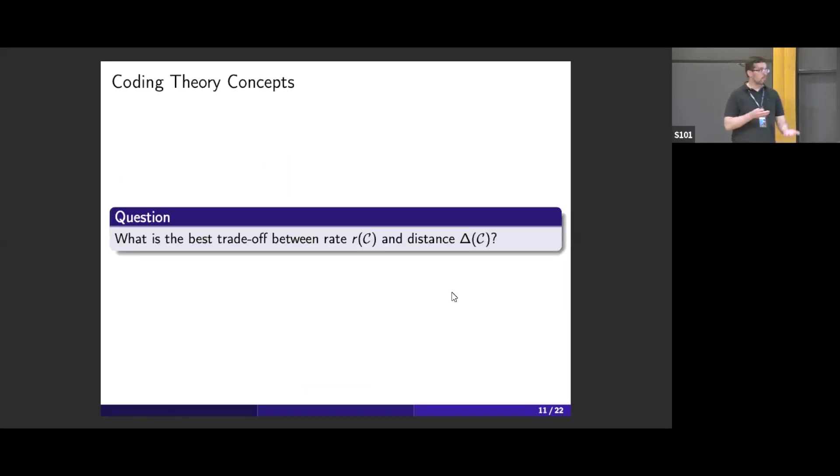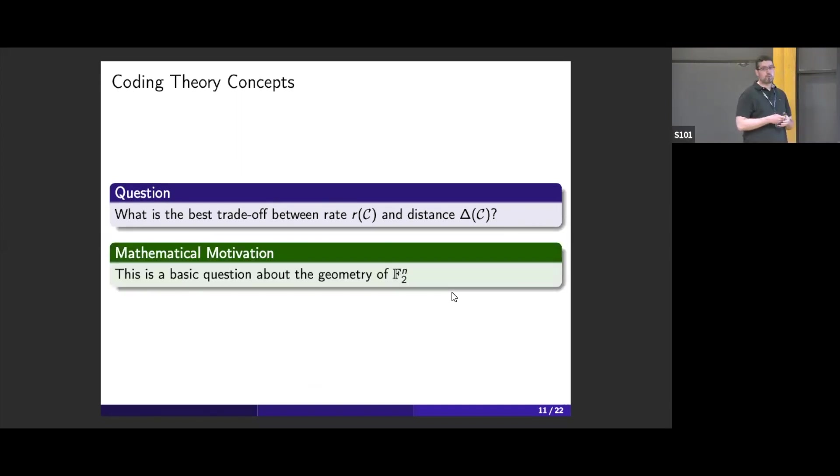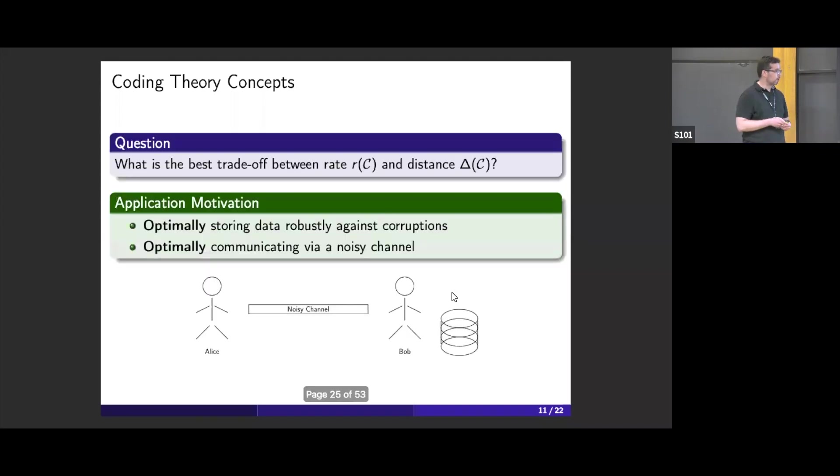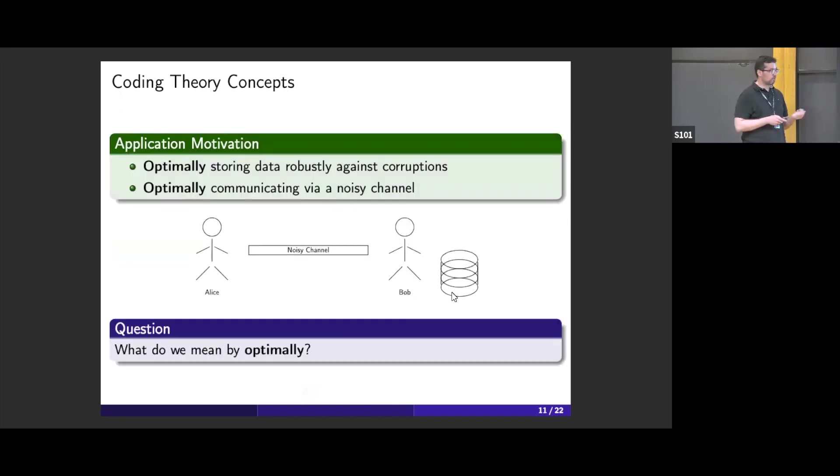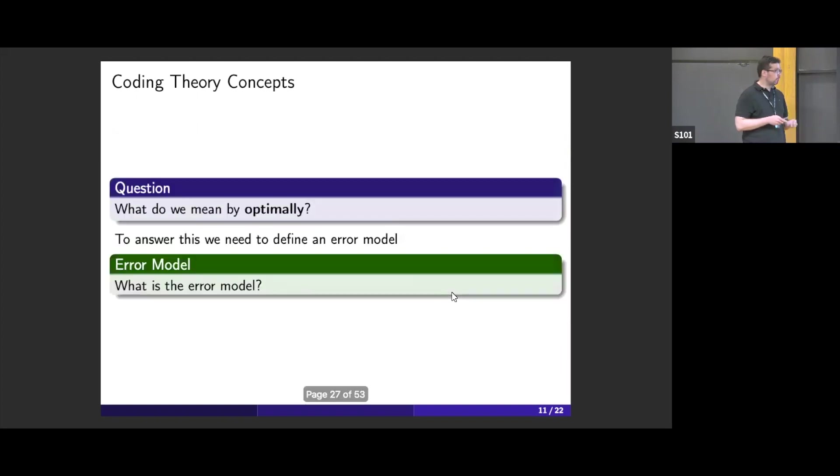The natural question is, what is the best trade-off between rate and distance? That's a very natural question in coding theory. The mathematical motivation to study this is a question about the geometry of this space. It's kind of discrete geometry. In terms of applications, if you are trying to store binary data in a robust way or communicate via noisy channel, you want to understand the trade-off between rate and distance with minimal redundancy.